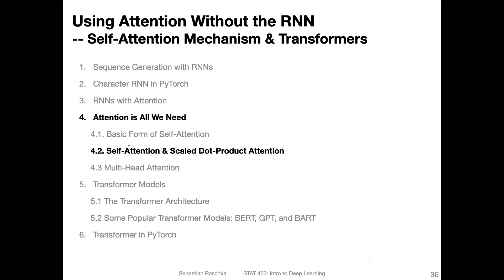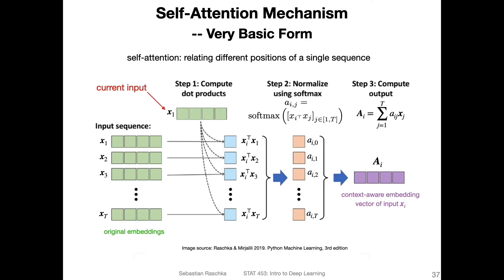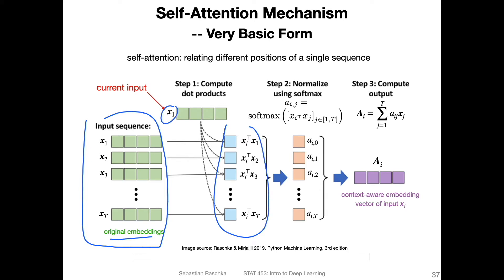In the previous video, we talked about a basic form of self attention. Now we are going to get a little bit more sophisticated and talk about the self attention mechanism that is used in the 'Attention Is All You Need' paper. To recap, this is what we looked at in the previous video, where we had the self attention mechanism defined with this input sequence, which were word embeddings. We computed the dot products between one particular input and all the other inputs, then normalized those with a softmax and computed the output as the attention weighted inputs.